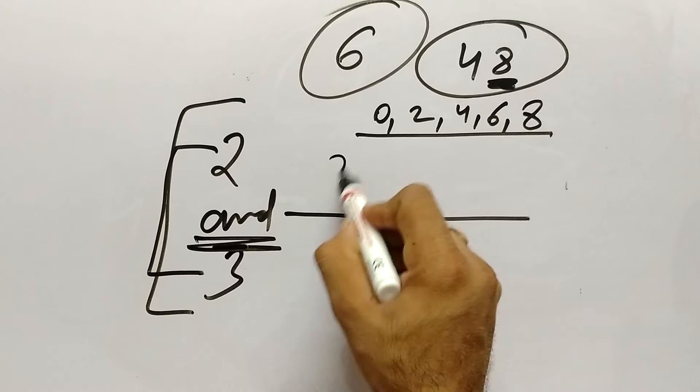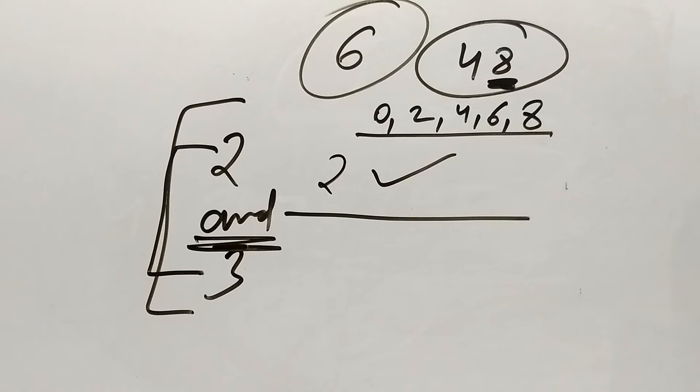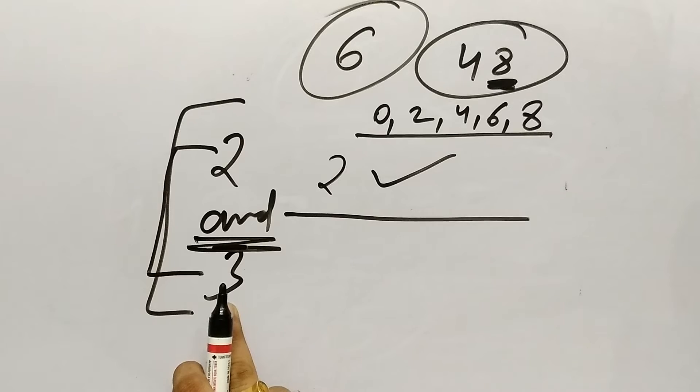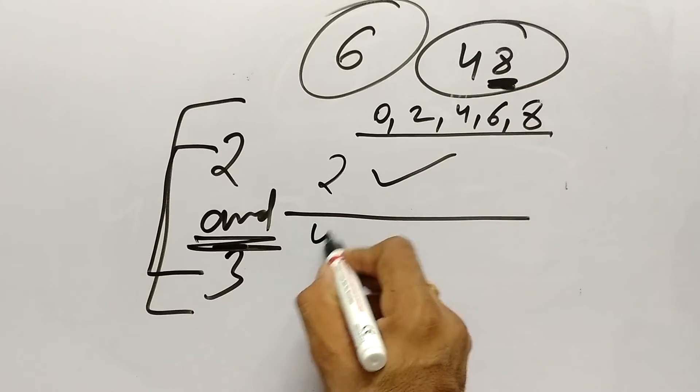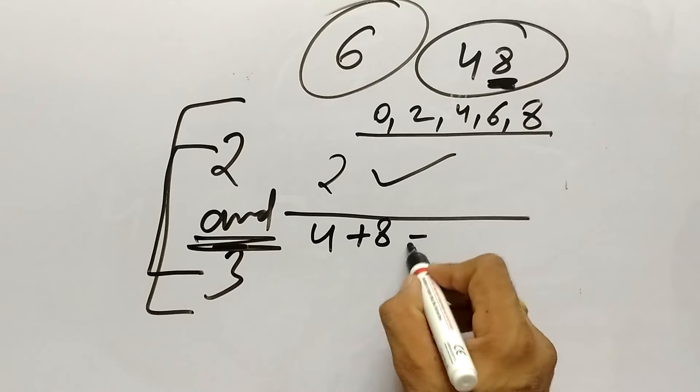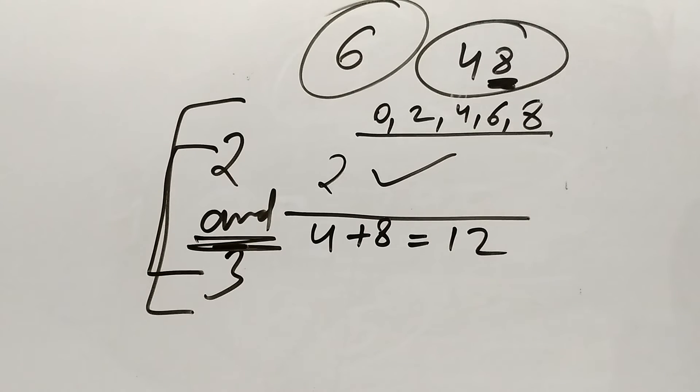To 48 exactly divisible by 2 hai. Ab 3 ka divisibility bhi hume previous video mein seekh chuke hai, but still I will explain you in this video also. 3 ka divisibility ke liye kya karenge: 4 and 8 ko hum add kar denge. So 4 plus 8, what it is giving? 12.